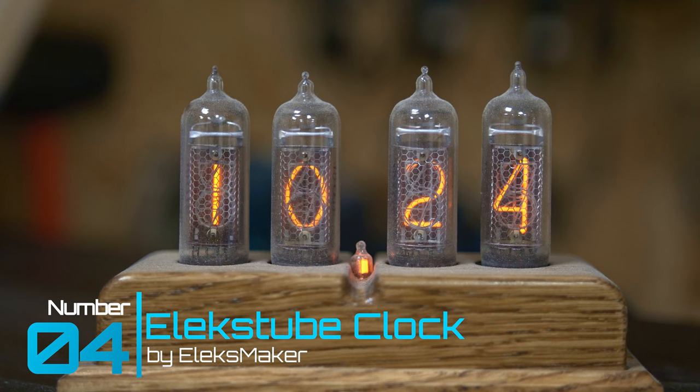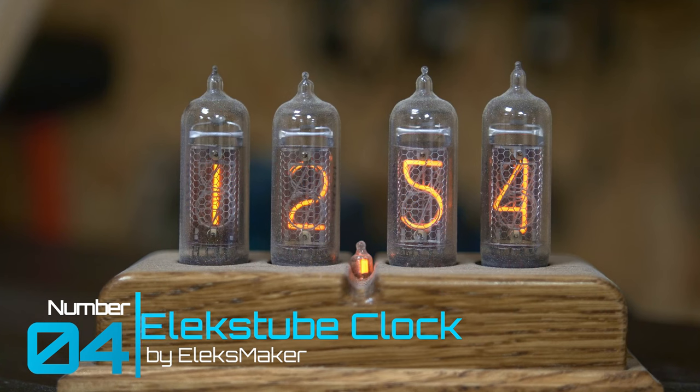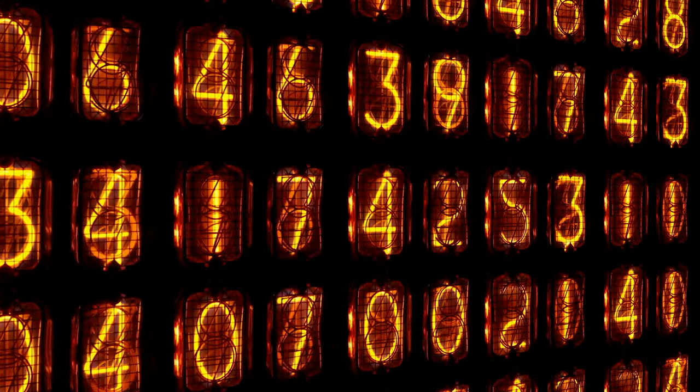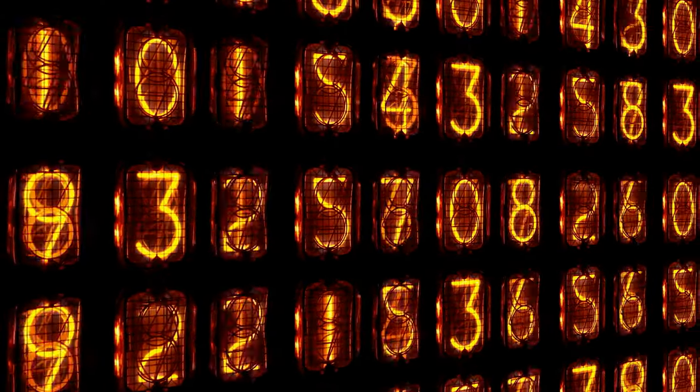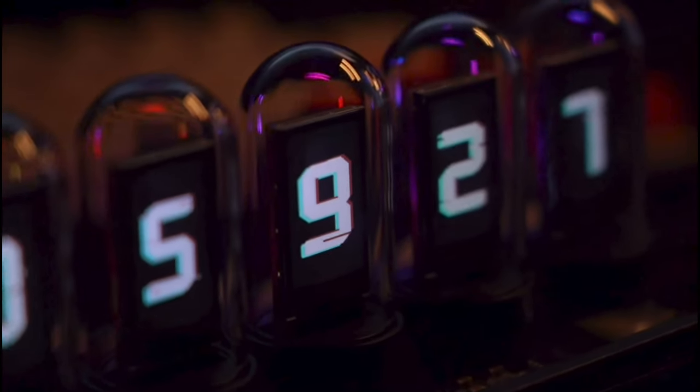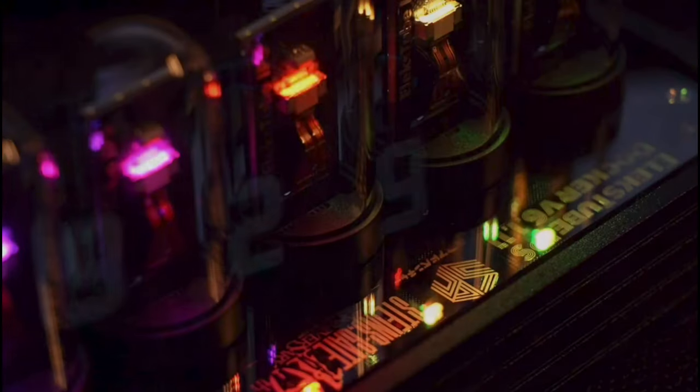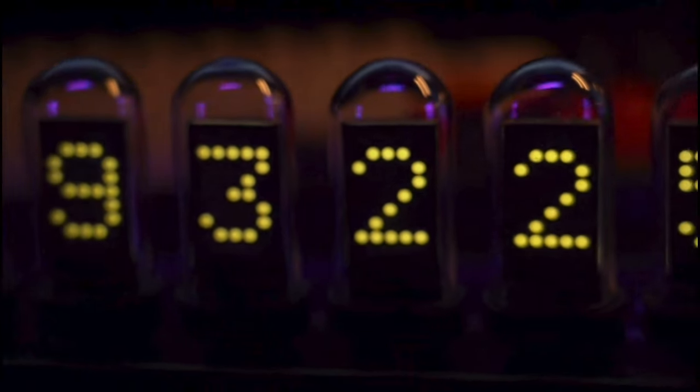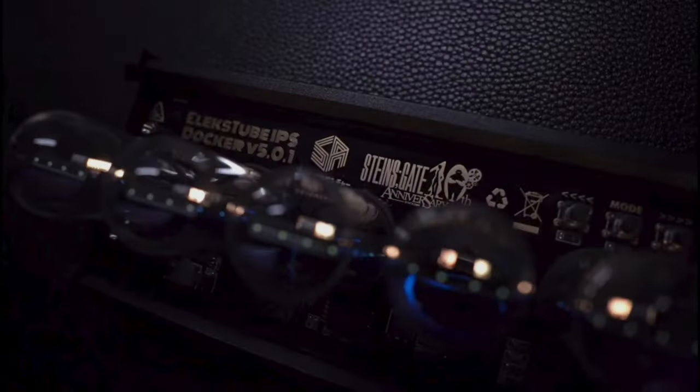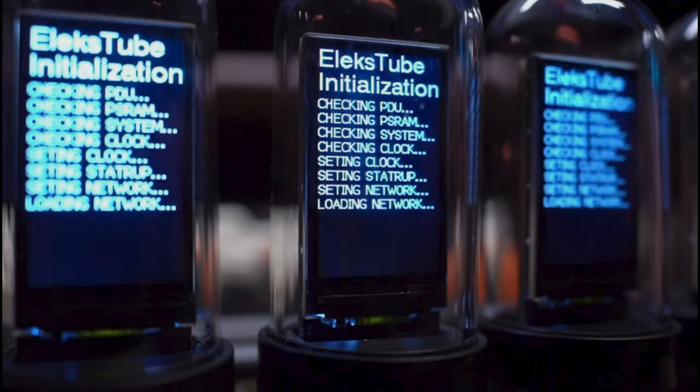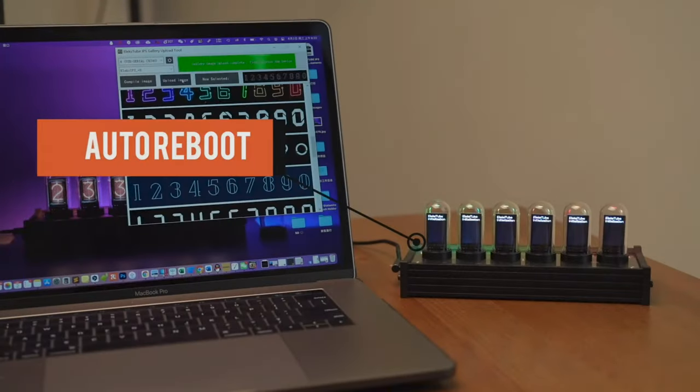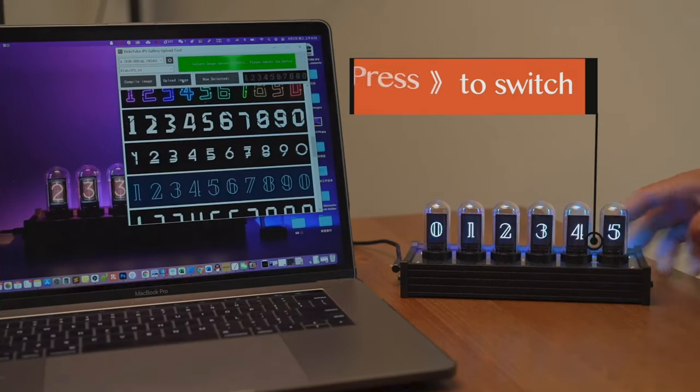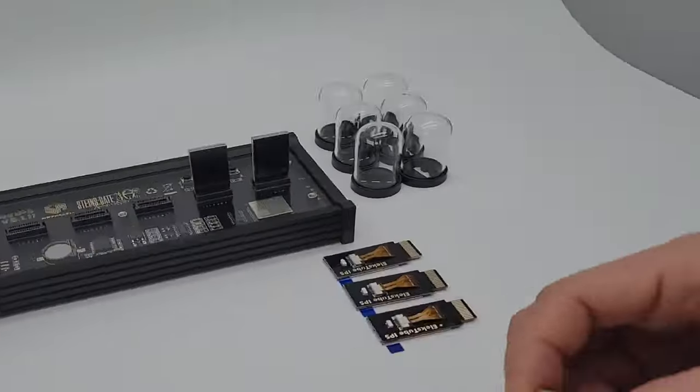And gadget number four: Elixir Tube Nixie Tube Digital Clock by Elixir Maker. Many still remember the old Nixie tube technology that started back in the 1950s through to the 1980s. It was a wonderful use of tech at the time. Now it adds an incredible sense of tech noir ambiance into any room. But these Nixie tubes are different, very different. They are constructed of a second-generation IPS screen.